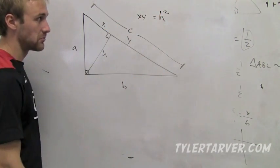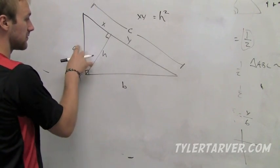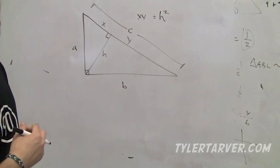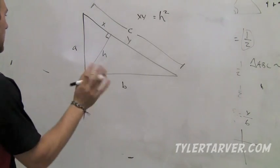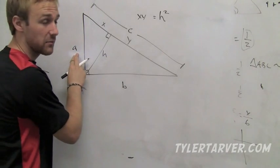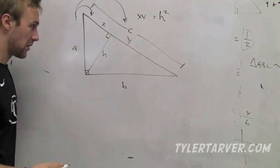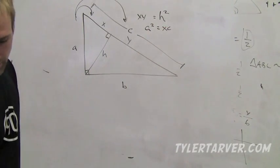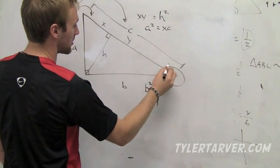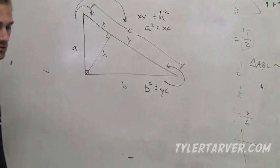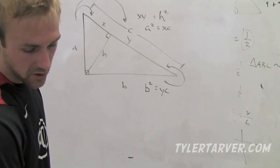Another thing: the legs of the triangle are the geometric mean of the side of the hypotenuse right next to it and the hypotenuse itself. So a squared equals x times c. Now for b, its geometric mean would be the geometric mean of the side next to it, which is y, times the whole thing, which is c. Let's work some problems together, some example problems.